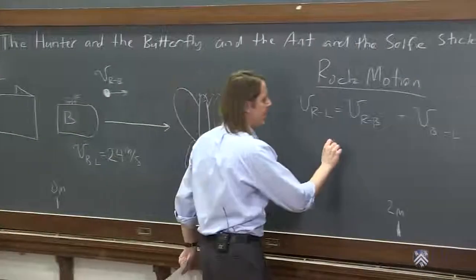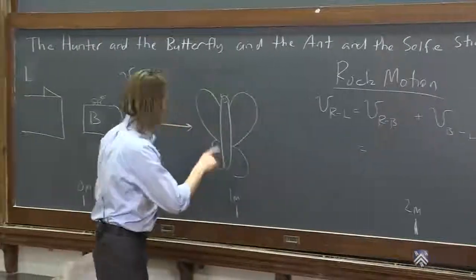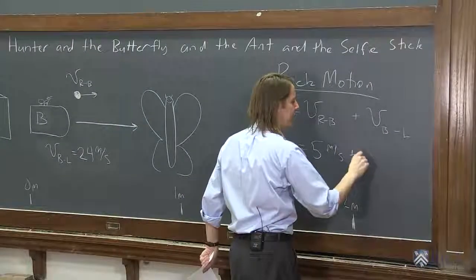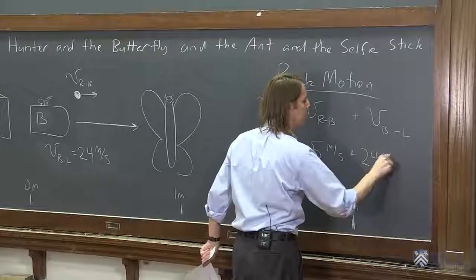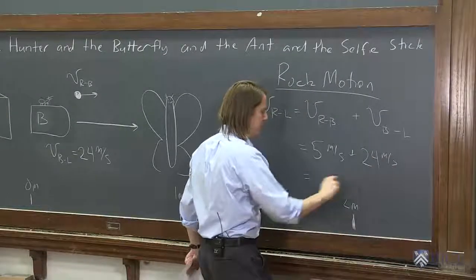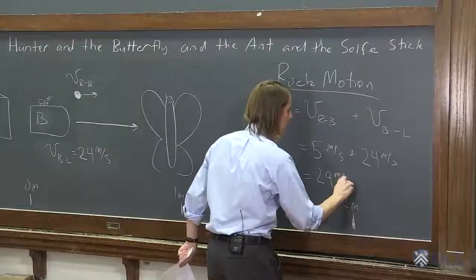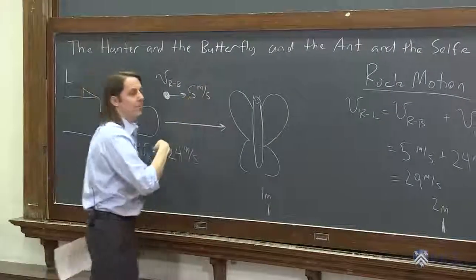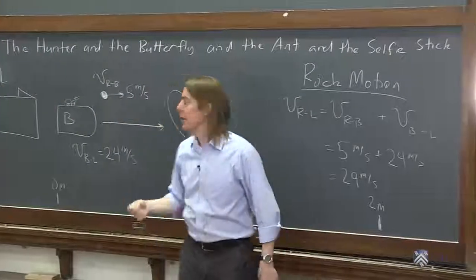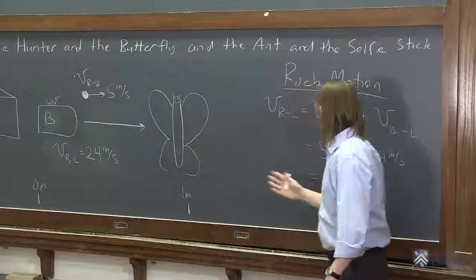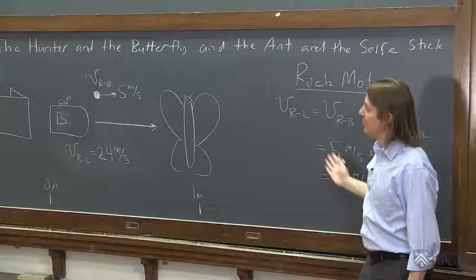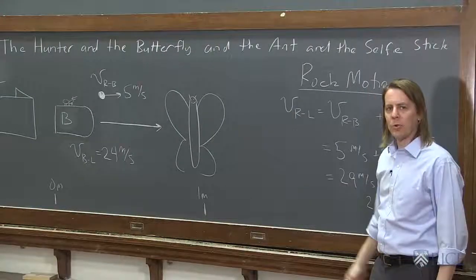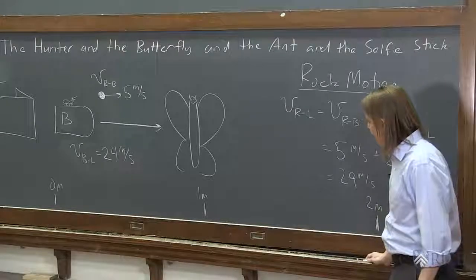So in this case we find that rock and bullet is five meters per second plus bullet in the lab frame we said was 24 meters per second. So sure enough, as your intuition would tell you, since the rock was thrown at five meters per second from a moving bullet at 24, the moment it was thrown it's going at 29. It's going at 29, the bullet's going at 24, so of course the rock got there first and that's what warned the butterfly and that's the only reason I missed.